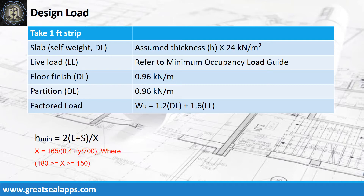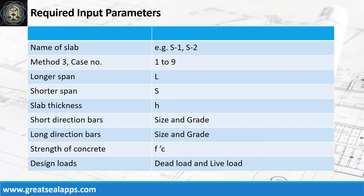Check the assumed thickness from the given minimum thickness formula. Enumerate input parameters required: name of slab like S1, S2; case number based on panel layout; longer span; shorter span; slab thickness; short direction bars with size and grade; long direction bars with size and grade; strength of concrete; and design loads.